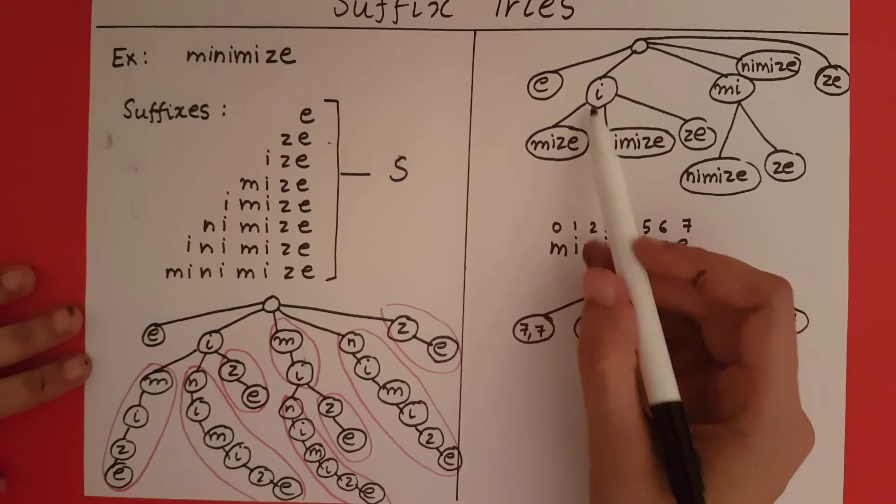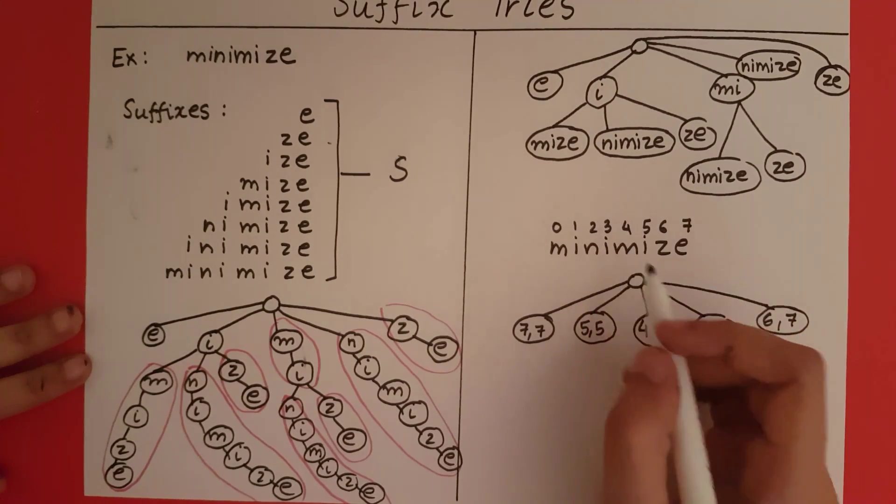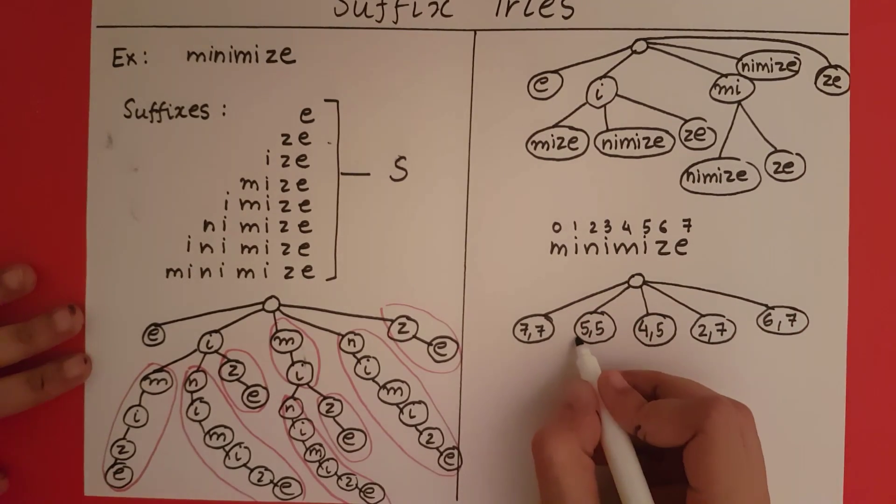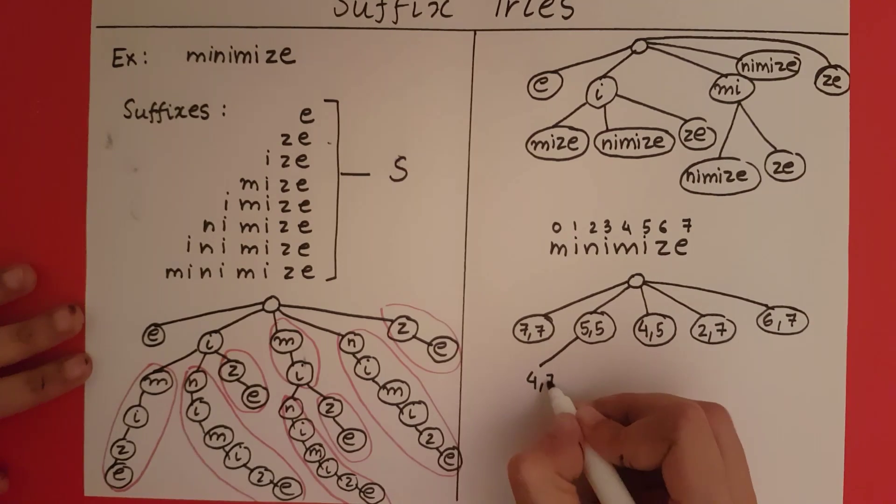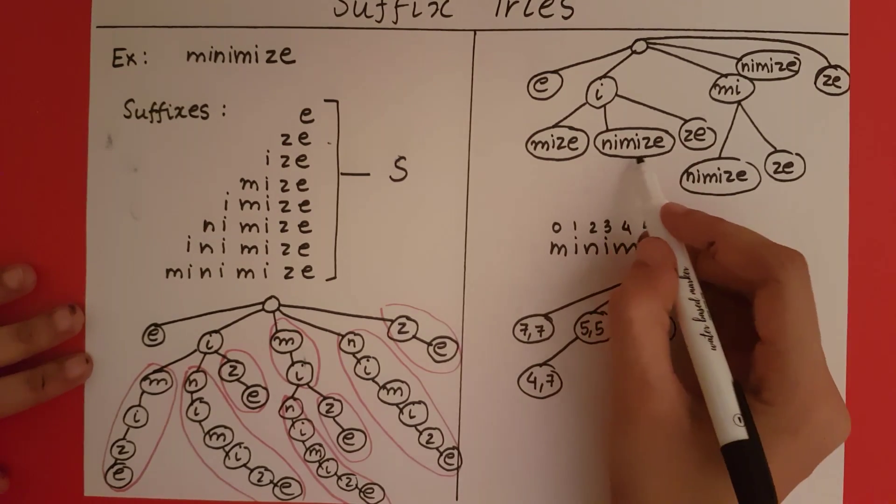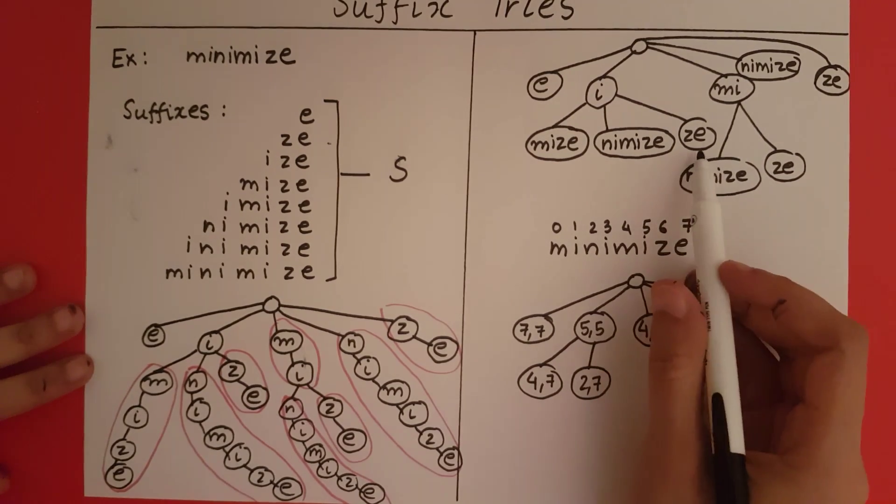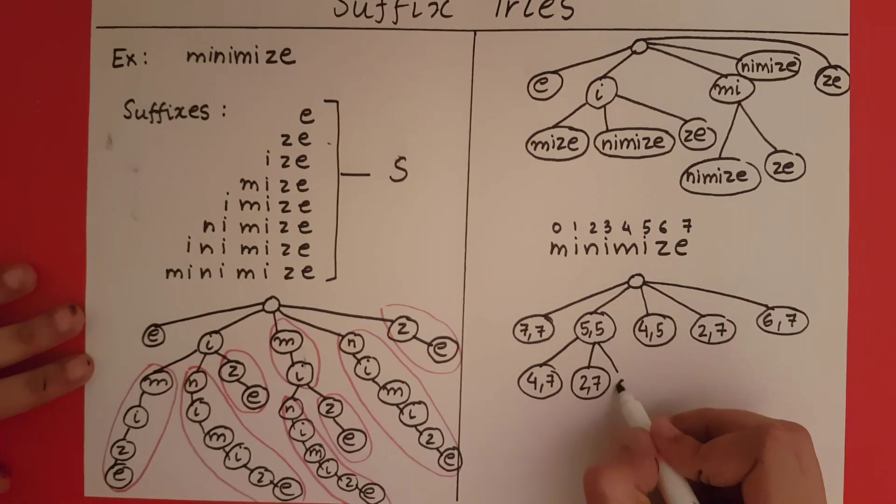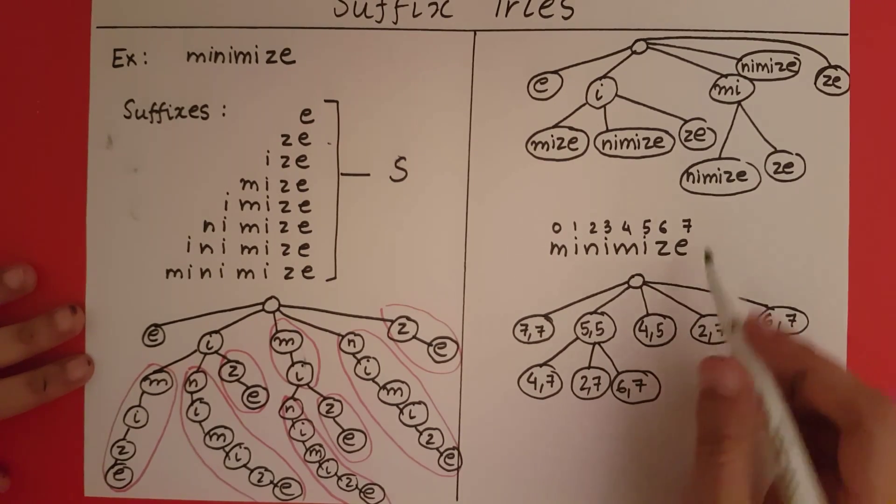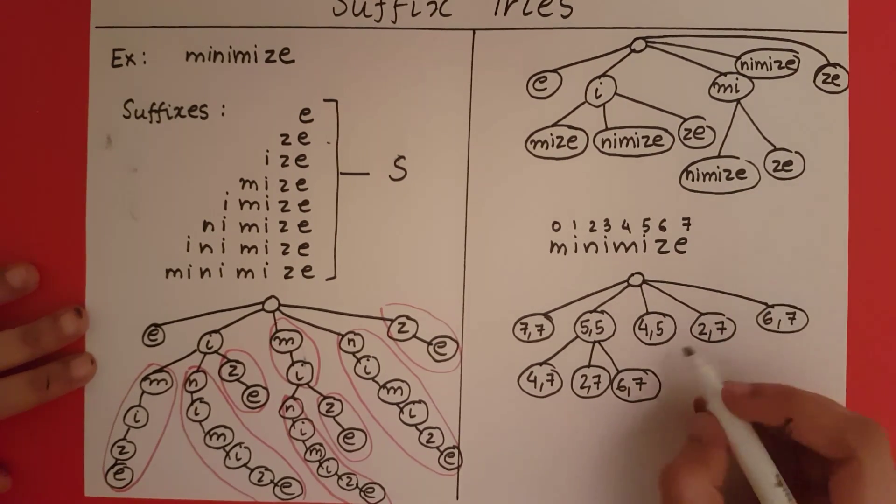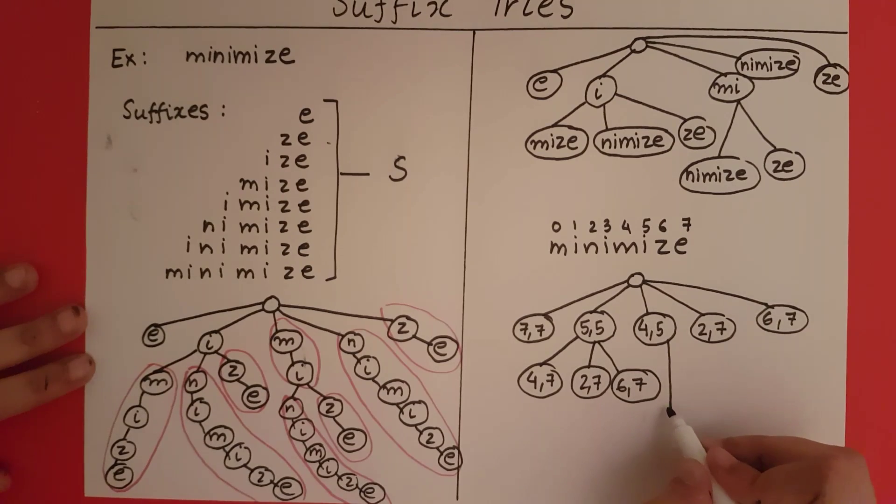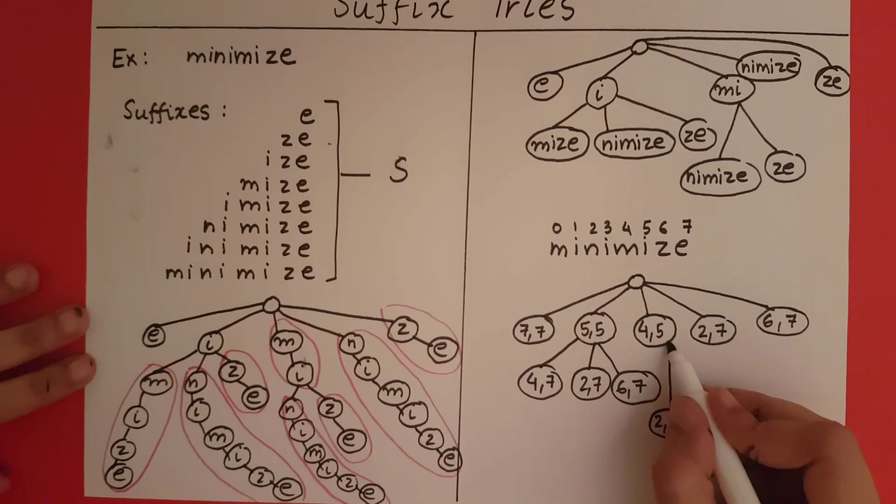Now let's go to the next layer. We have mize which is 4 to 7, we have nimize which is 2 to 7, and then we have ze which is 6 to 7. For mi, we have nimize which is going to be from 2 to 7, and ze which is going to be from 6 to 7.